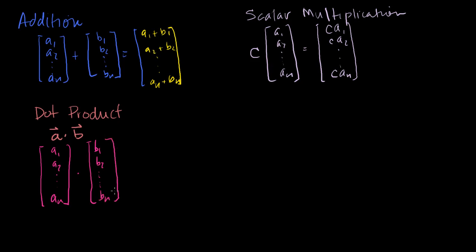This is going to be equal to the product of each of their corresponding components. So a1 b1, added together, plus a2 b2, plus a3 b3, plus all the way to an bn.